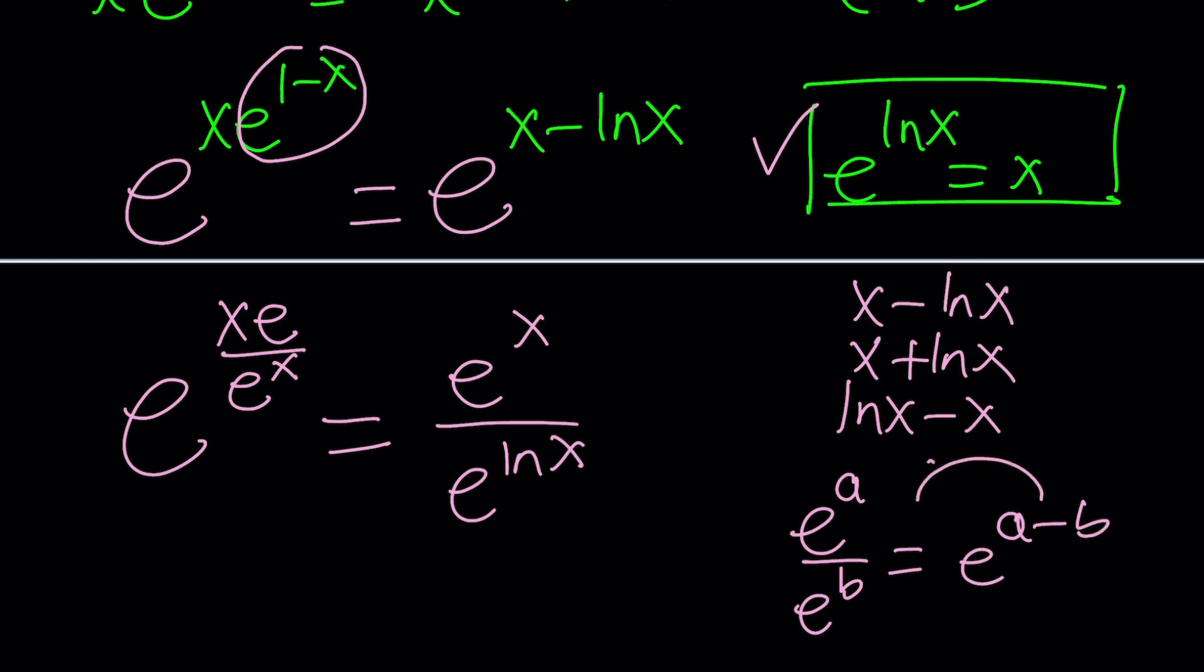Whenever you have something like e to the power a divided by e to the power b it's e to the power a minus b. But don't forget this is a two-sided equation. It works both ways right? So we can go ahead and reverse the process basically here.